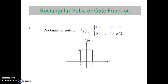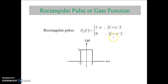Next is the rectangular pulse or gate function. Its mathematical expression is: delta_a(t) equals 1/a for |t| less than or equal to a/2, and 0 for |t| greater than a/2. This is the graphical look of the rectangular pulse.